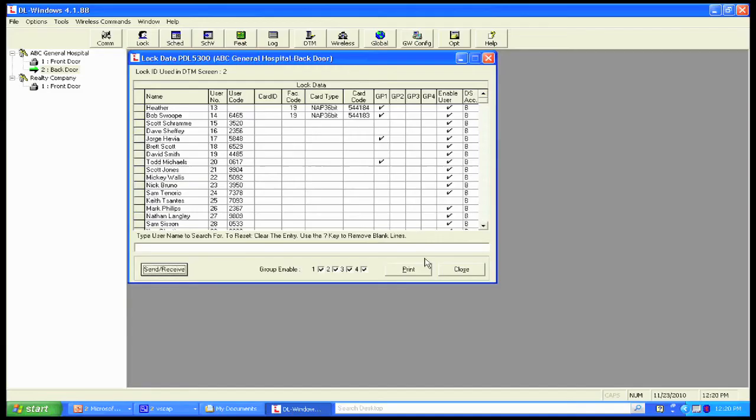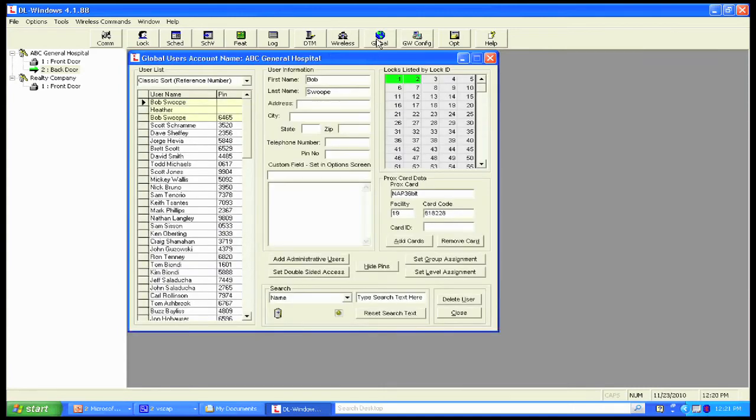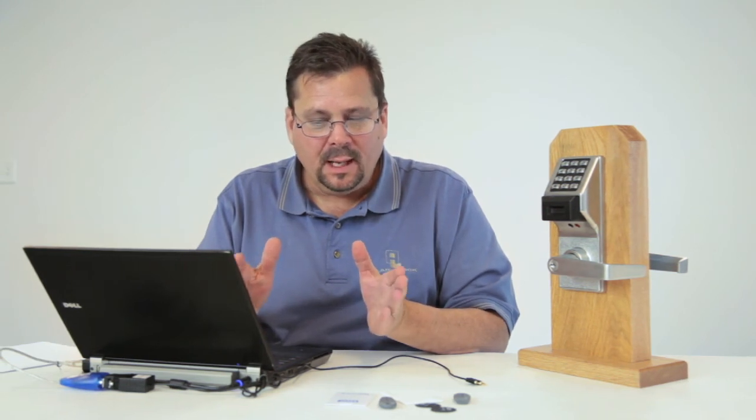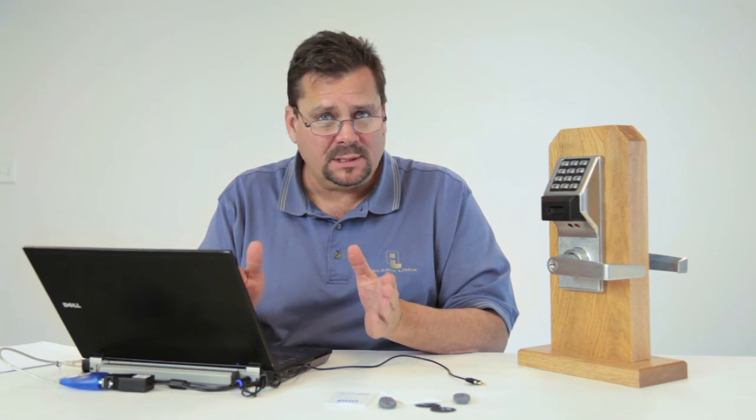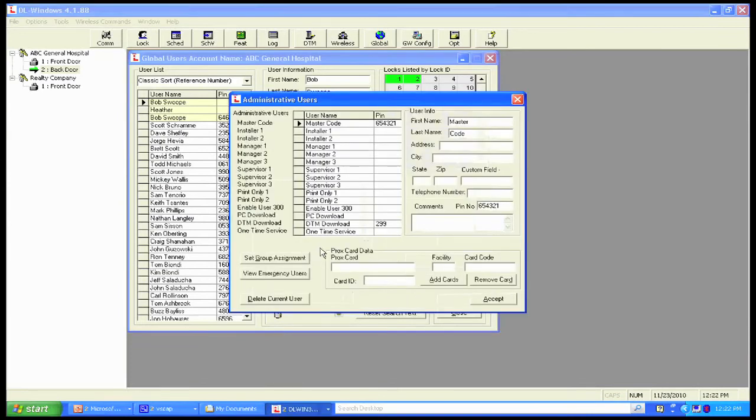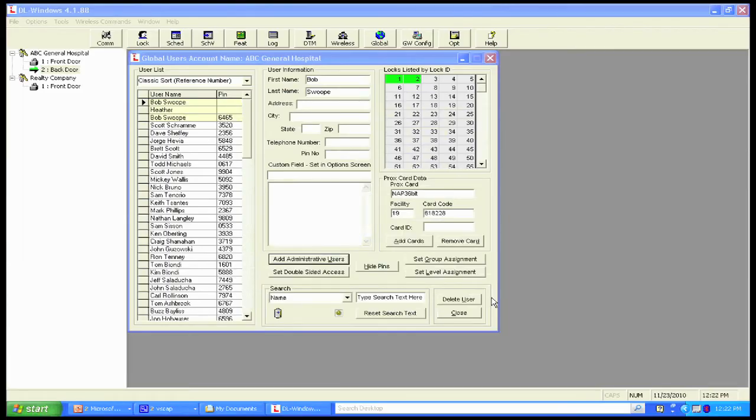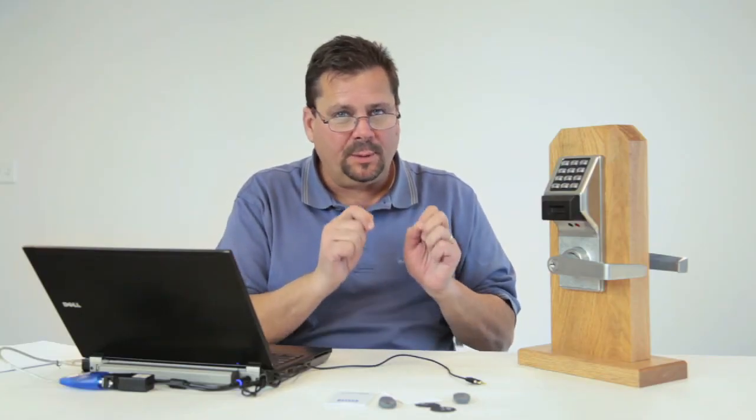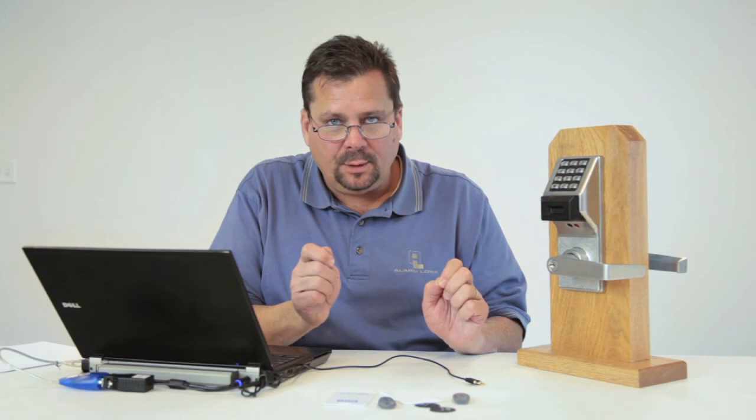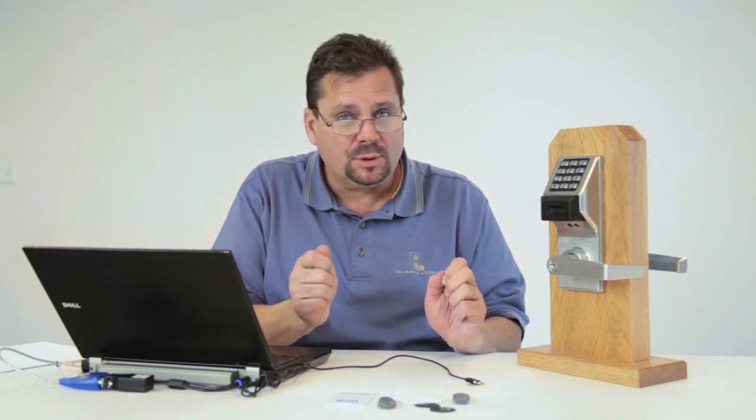The other method we do is we come up here to the global user screen. Instead of having to give out my master code to Heather, I'm going to give her the laptop, but I don't want to have to go through the process. We have a shortcut, and the shortcut allows us to plug it in, the laptop in, and we can treat the laptop as a DTM by entering in what we call the PC upload download code. And how we do that is we're going to come here to add administrative users. We're going to come here to the PC download code, and we're going to give it a PIN number. Let's make it 888. Once we do that, we hit accept. We're good. But the thing that we have to do the very first time, however, is we have to manually program that into the lock. The PC upload download code, like the DTM, is an actual user in a lock. That happens to be user number 298.